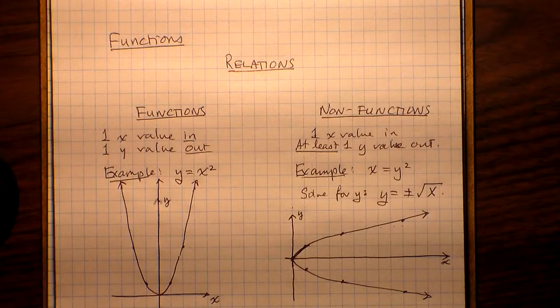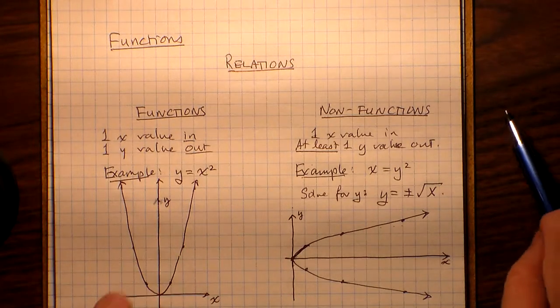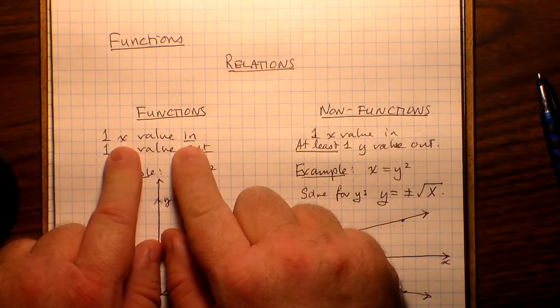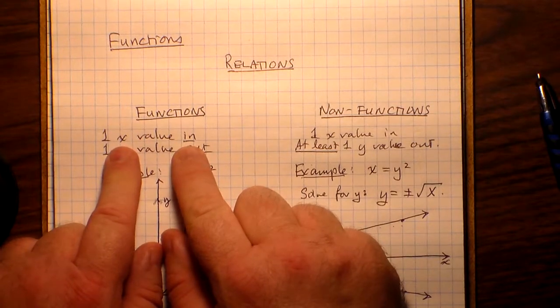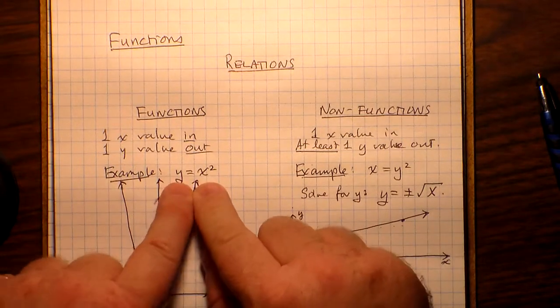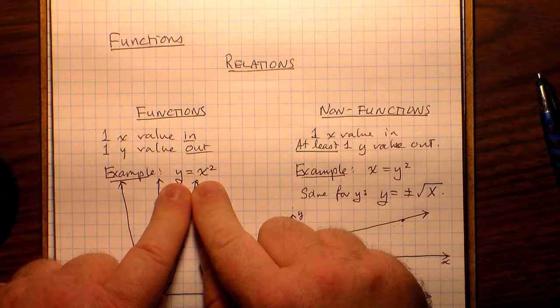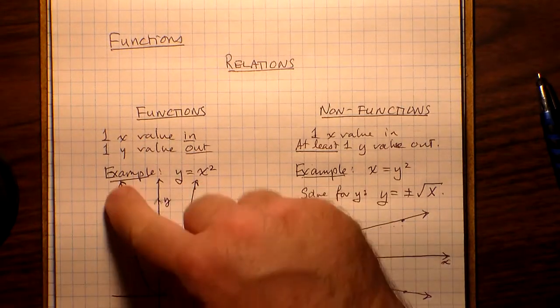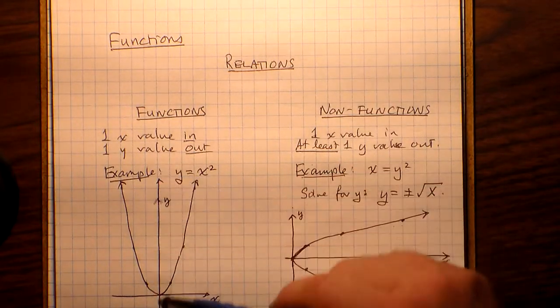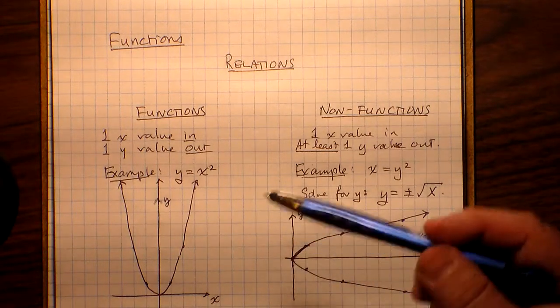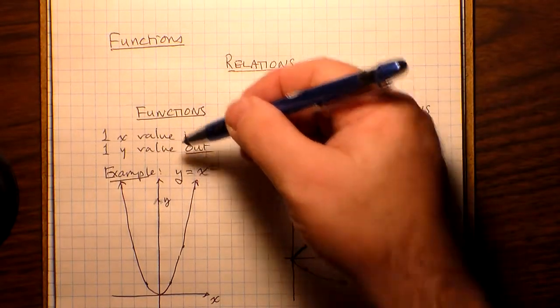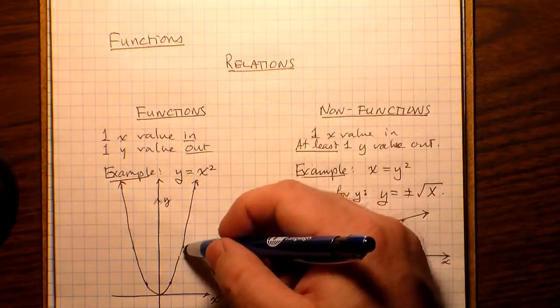But what distinguishes functions from non-functions? Well, let's take a look at a function to see what the rules are. So the rules are: if I stick in one x value into a function, if I substitute one value for x, I usually expect to get one value for y. And so an example would be y = x². From grade 10 you know that is a parabola, and it's a parabola that's symmetrical on both sides. The y-axis is the axis of symmetry. And you can see that if I put in a value of x, if I put in a value of x like 2, for example, I get the y value 4. Okay, so 2² = 4.